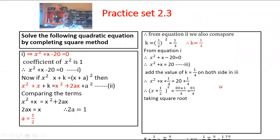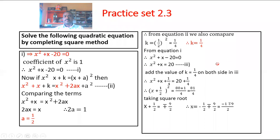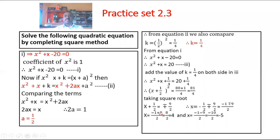Taking square root on both sides: x plus 1 by 2 equals plus or minus square root of 81 upon 4. Square root of 81 is 9 and square root of 4 is 2, so plus or minus 9 by 2. Moving 1 by 2 to the RHS: x equals minus 1 plus or minus 9 upon 2. So x equals (minus 1 plus 9) upon 2 equals 8 by 2 equals 4, and x equals (minus 1 minus 9) upon 2 equals minus 10 upon 2 equals minus 5. Hence minus 5 and 4 are the roots of the given quadratic equation.